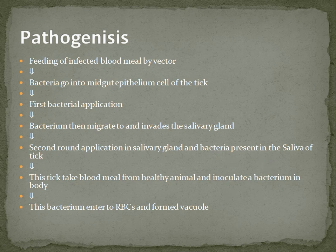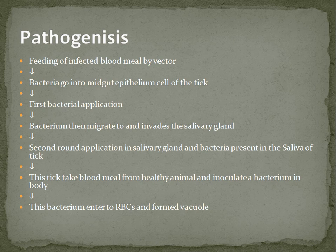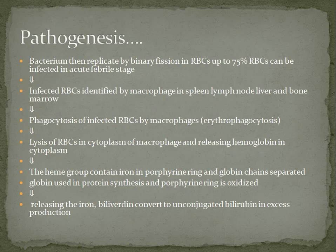The bacteria then migrate and invade the salivary gland of the tick. A second round of replication in the salivary gland occurs and the bacteria remain present in the saliva of the tick. After a long time, this tick takes blood from a healthy animal and inoculates the bacterium into the body of the cattle. The bacterium enters the RBCs and forms vacuoles.